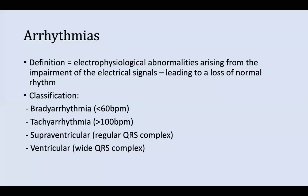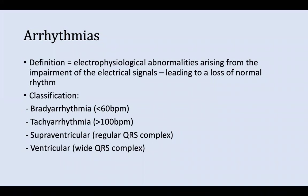Starting off with arrhythmias. The definition of an arrhythmia is an electrophysiological abnormality arising from the impairment of an electrical signal, leading to the loss of the normal rhythm. The normal rhythm is the sinus rhythm set by the SA node — the normal sinus rhythm is around 60 to 100 beats per minute. Bradyarrhythmia is anything below 60 beats per minute; tachyarrhythmia is anything above 100 beats per minute.